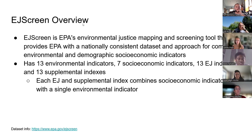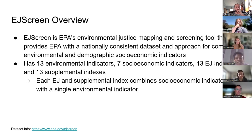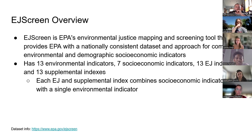I'm going to switch to EJSCREEN, which was developed by the EPA. It's an environmental justice mapping and screening tool that provides the EPA with a nationally consistent dataset and approach for combining environmental and demographic socioeconomic indicators. It has 13 environmental indicators, 7 socioeconomic indicators, 13 environmental justice indexes, and 13 supplemental indexes. Each EJ and supplemental index combines socioeconomic indicators with a single environmental indicator.